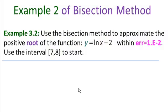In this video, we're going to solve an example of the bisection method by hand, that is using a calculator and writing out the answers by hand. Example 3.2: Use the bisection method to approximate the positive root of the function y equals ln(x) minus 2 within an error of 10 to the minus 2, so 10^-2. Use the interval [7, 8] to start.